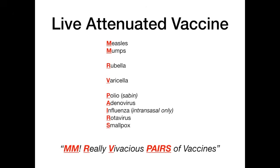Vivacious means lively and we're talking about live attenuated vaccines. Then 'PAIRS' — P-A-I-R-S: the P for polio, the A for adenovirus, the I for influenza and intranasal, the R for rotavirus, and the S for smallpox. So on test day when they ask which is a live attenuated vaccine, think: live means lively means vivacious — 'MMM, Really Vivacious PAIRS of vaccines' — and you'll remember exactly what the examples are.